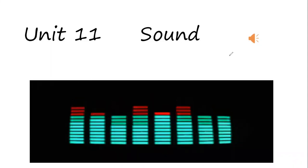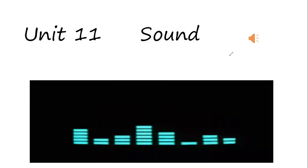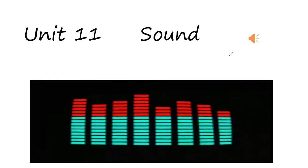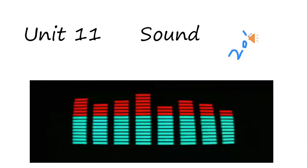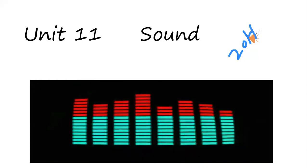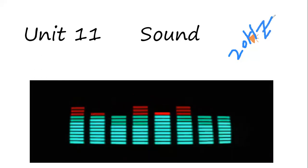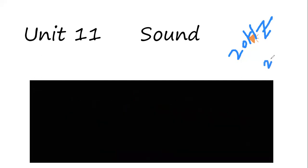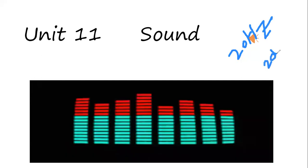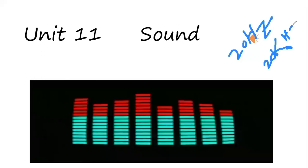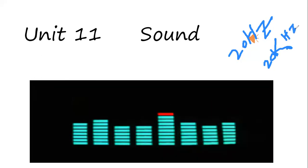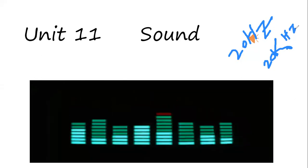Different sounds have different frequencies. Some sounds are audible and some are not audible. The audible frequency range is from 20 Hz to 20,000 Hz. This is the human audible range.